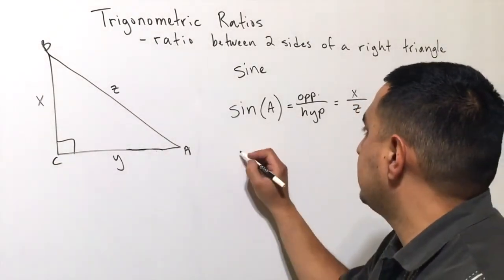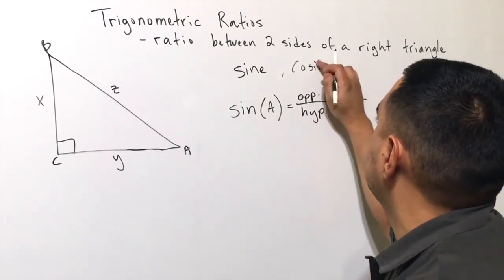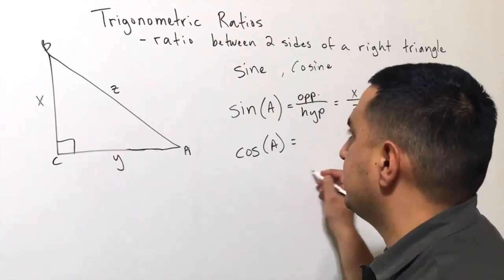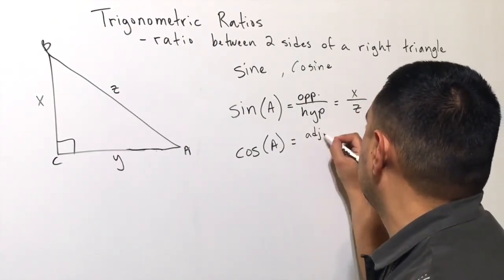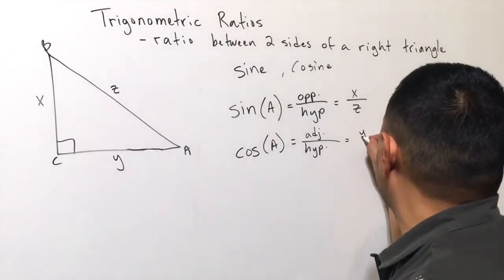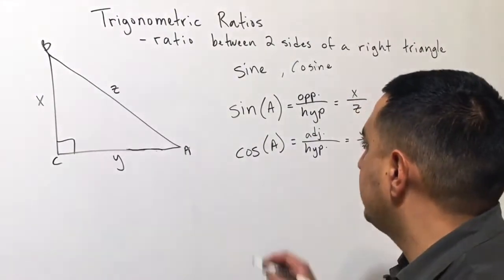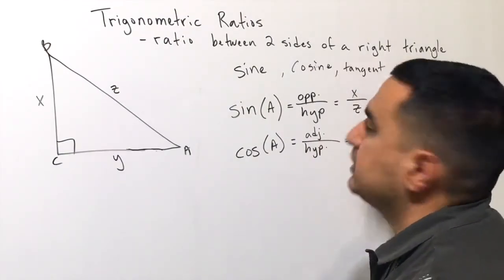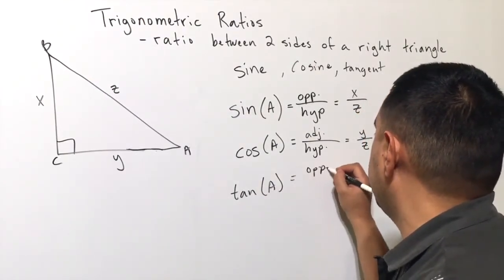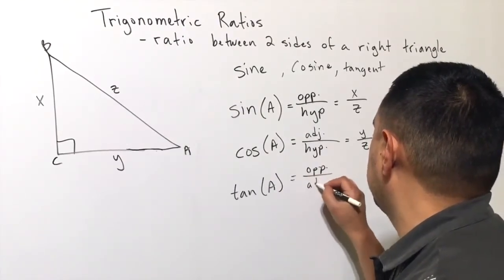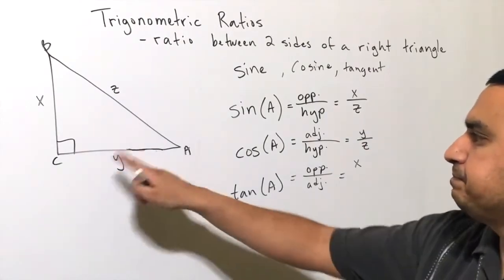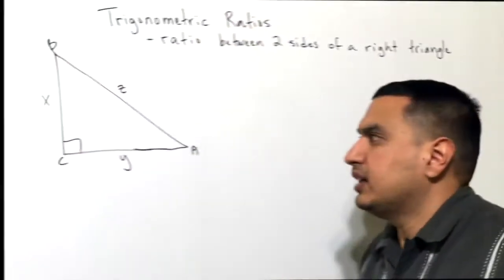The cosine ratio, abbreviated cos, is the adjacent leg over the hypotenuse. In this drawing the adjacent leg is y and the hypotenuse is z. The tangent ratio, abbreviated tan, is the opposite leg over the adjacent leg — in this case, x over y.